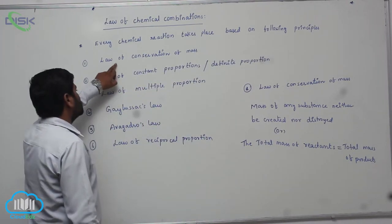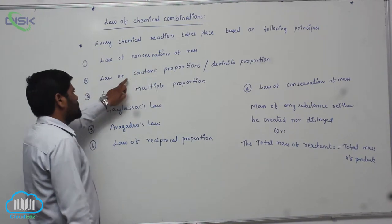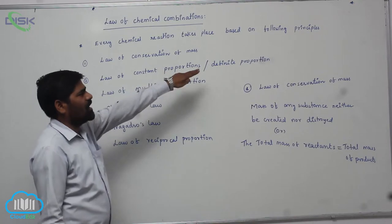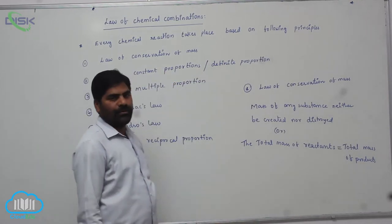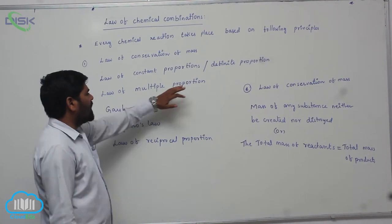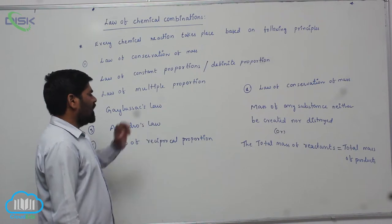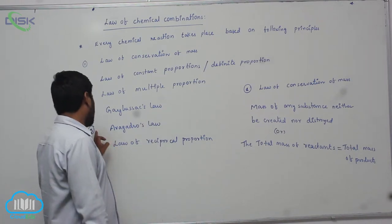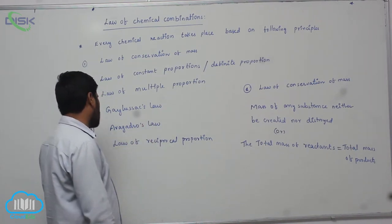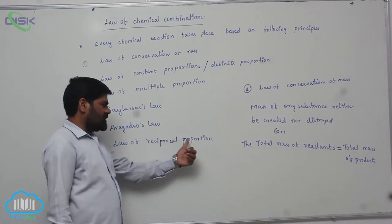The first principle is law of conservation of mass. Second one is law of constant proportions or definite proportions. Third one is law of multiple proportions. Fourth one is Gelusak law. Fifth one is Avogadro's number or Avogadro's law. Sixth one is law of reciprocal proportions.